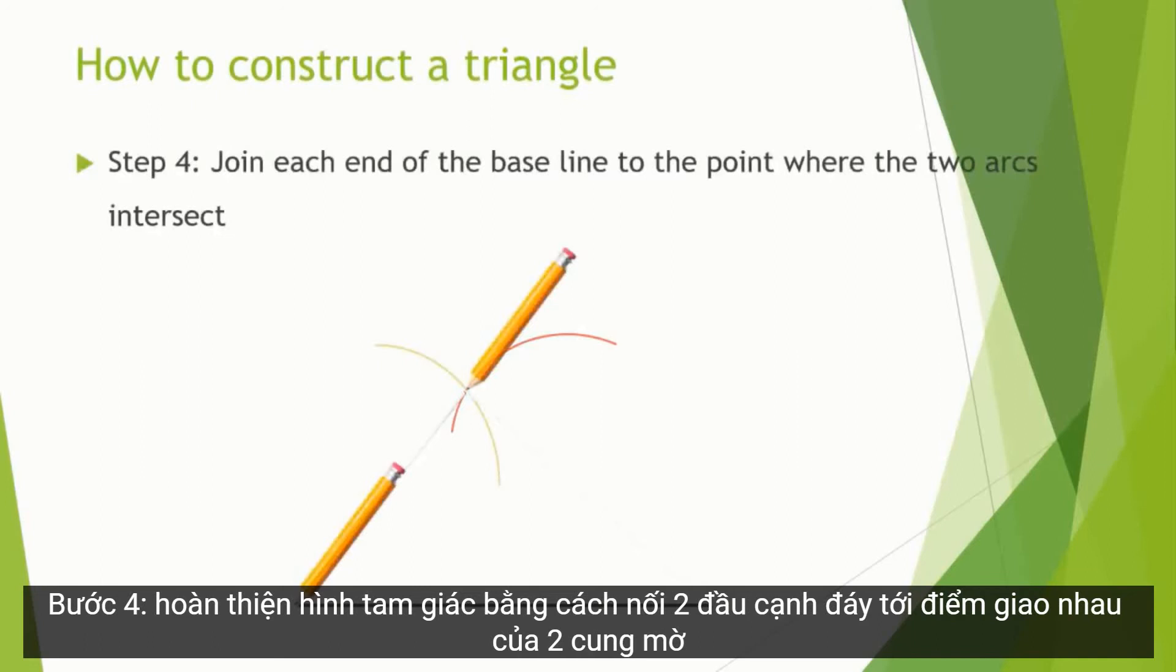Step 4: Complete the triangle by joining each end of the base line to the point where the two arcs intersect.